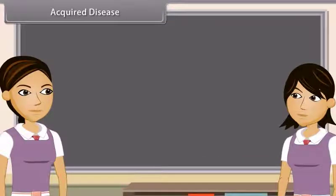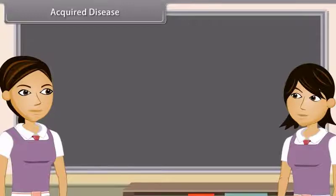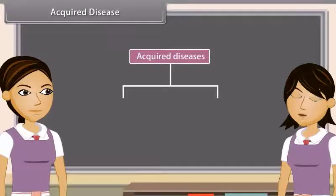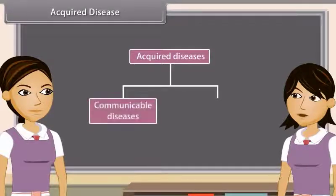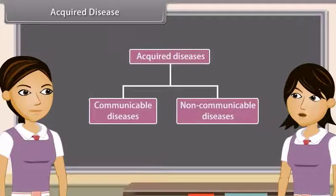Acquired diseases occur only after birth and hence they are non-inherited. But acquired diseases are of two types: communicable diseases and non-communicable diseases. For example, influenza.